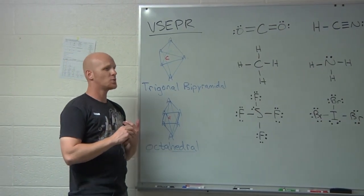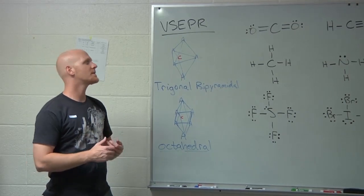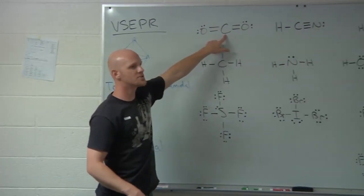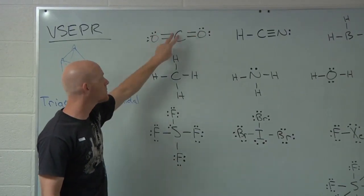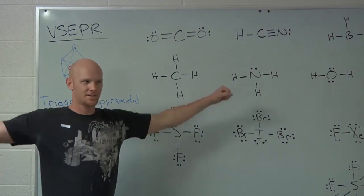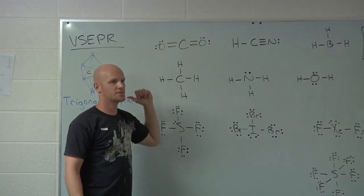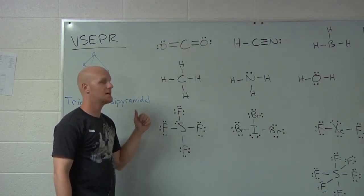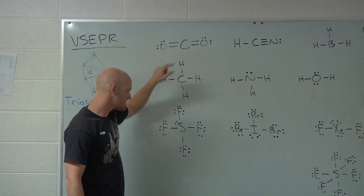We talk about two different types of geometry: electron domain geometry and molecular geometry. For a carbon atom with two electron domains, both in directions to atoms, the electron domain geometry is linear with 180° angles. When all your electron domains are atoms (bonding domains), the electron domain geometry and molecular geometry share the same name — both are called linear.